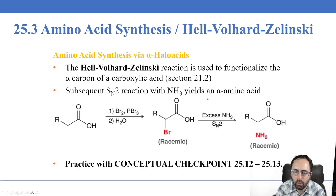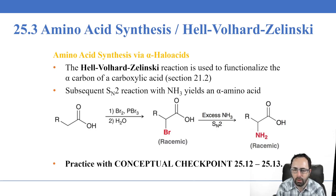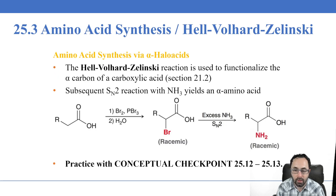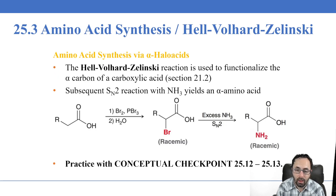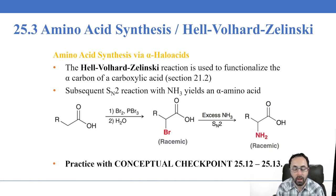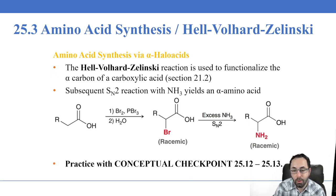We've now talked about the properties of amino acids, their identities and side chains, the fact that all natural amino acids have L stereochemistry by analogy to D carbohydrates, the various side chains in the 20 amino acids, which are the essential amino acids, and how pH affects the charge of amino acids and how that can be used for separation via electrophoresis. In the next lecture, we'll begin to talk about the kinds of reactions used to produce amino acids from organic molecules by organic synthesis.